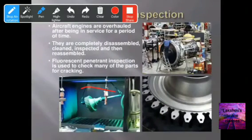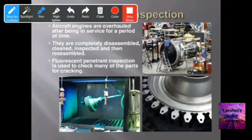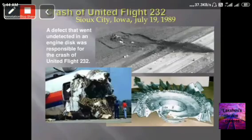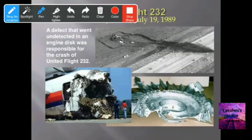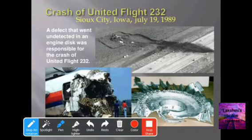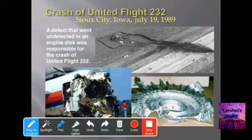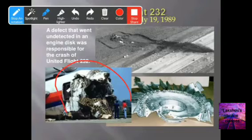For jet engine inspection, aircraft engines are overhauled after service, completely disassembled, cleaned, inspected, and reassembled. Fluorescent penetrant inspection is used to check many parts for cracking. A defect that went undetected in an engine disk was responsible for the crash of United Flight 232 in July 1989.